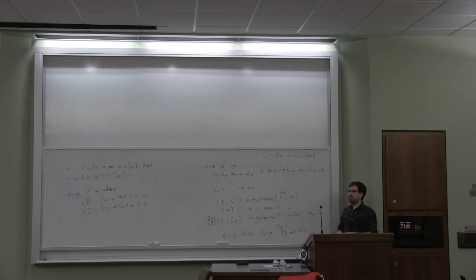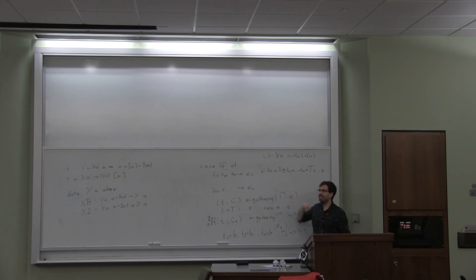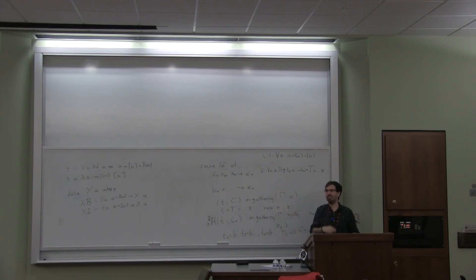With all of this, you can essentially type check all of your Haskell expressions, because we've covered application, abstraction, variables, and pattern matching. If you want to do more, you just translate things like do-notation to binds and your other constructs, and you're done.